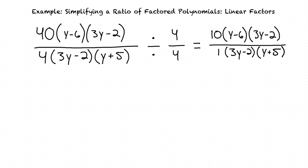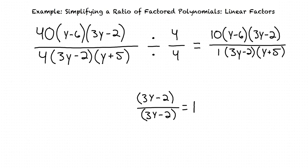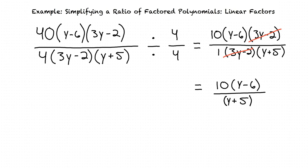At this point, with our coefficients simplified, we want to look at the linear factors and see which ones, if any, are the same in the numerator and the denominator. In this problem, (3y minus 2) is a factor in both the numerator and the denominator. Since (3y minus 2) divided by (3y minus 2) equals 1, we can cancel out both (3y minus 2) terms. This leaves us with 10 times (y minus 6) divided by (y plus 5).